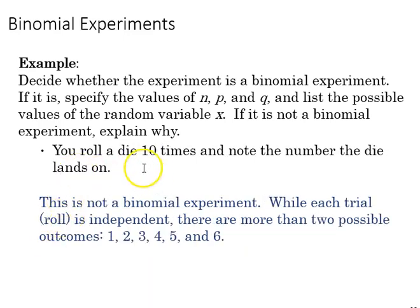Here's another example where we roll a die 10 times and note the number the die lands on. Each trial is independent, but in that example there's more than two possible outcomes because we're just noting the number.